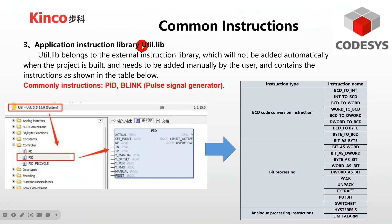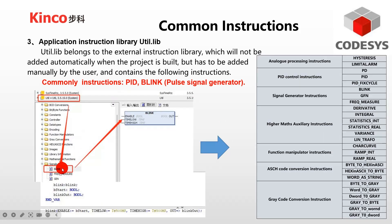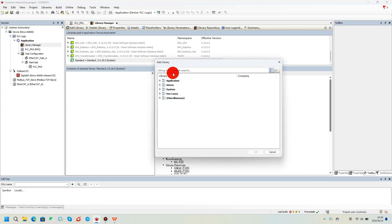Let's see these instructions on CodeSys. If you want to use the macro instruction library util.lib, it is an external instruction library which requires the user to add it manually. The instructions included are shown in the table. The common instructions include PID and Blink. The clip shows you how to add the instructions.